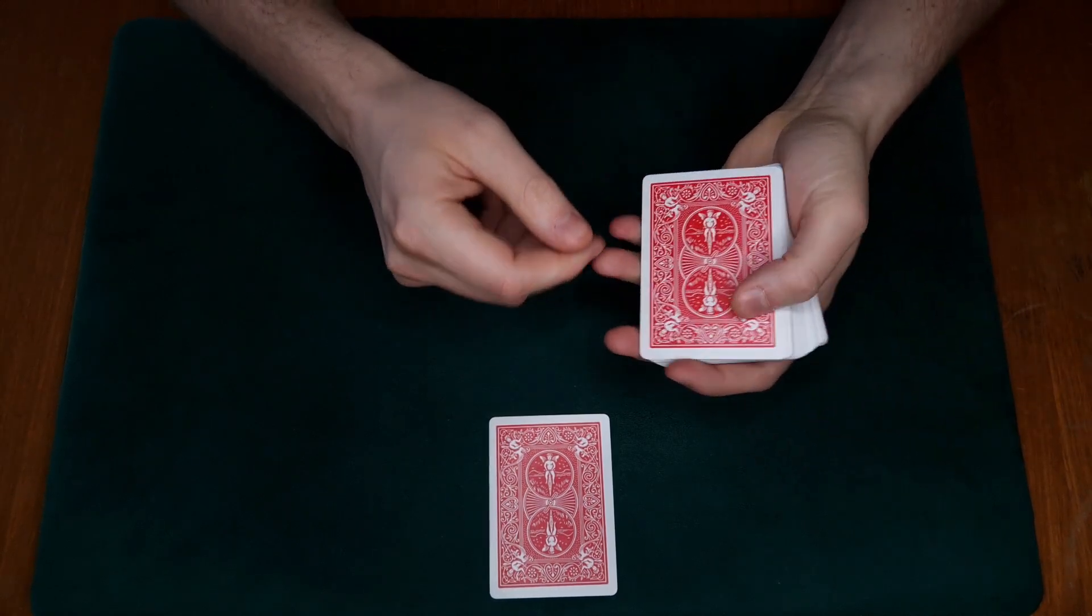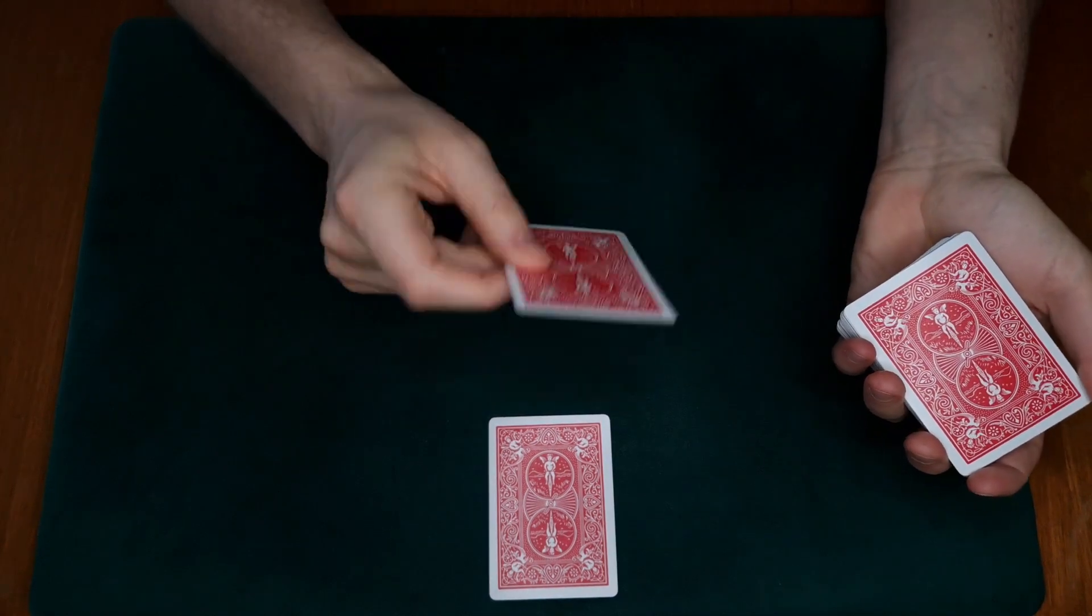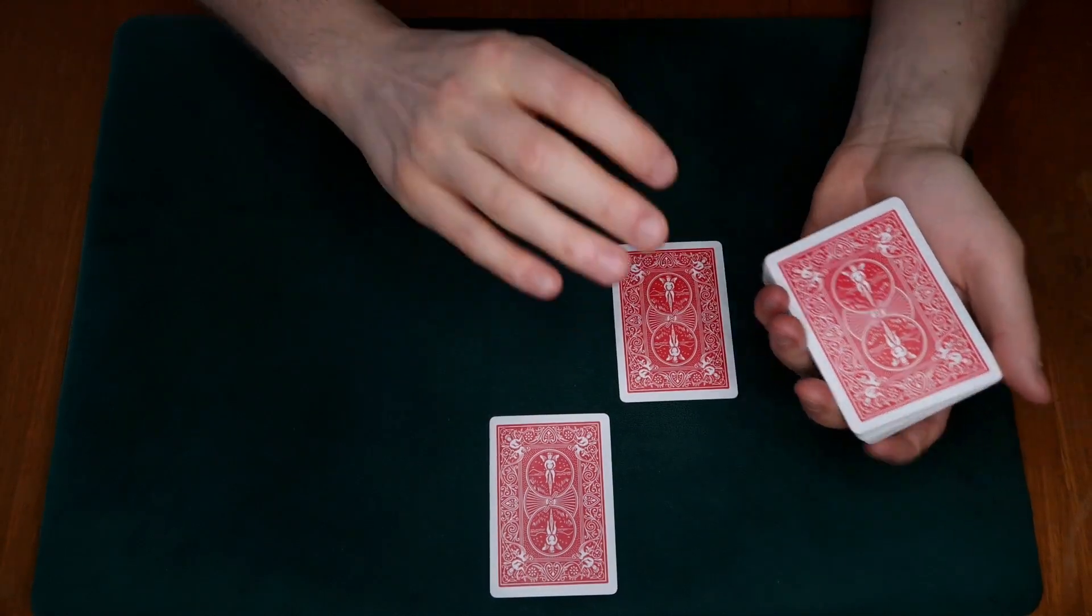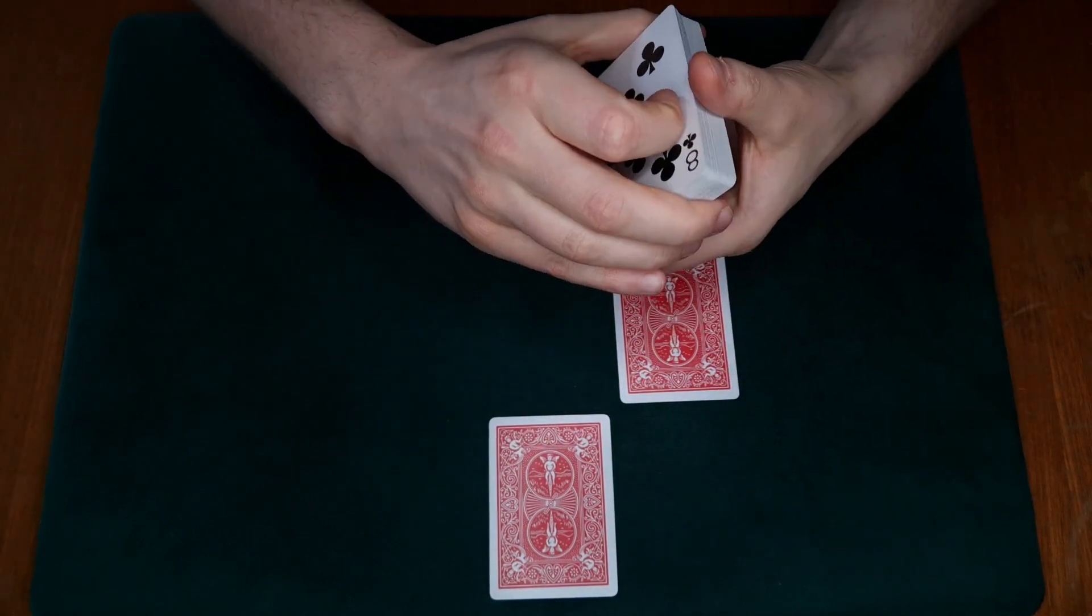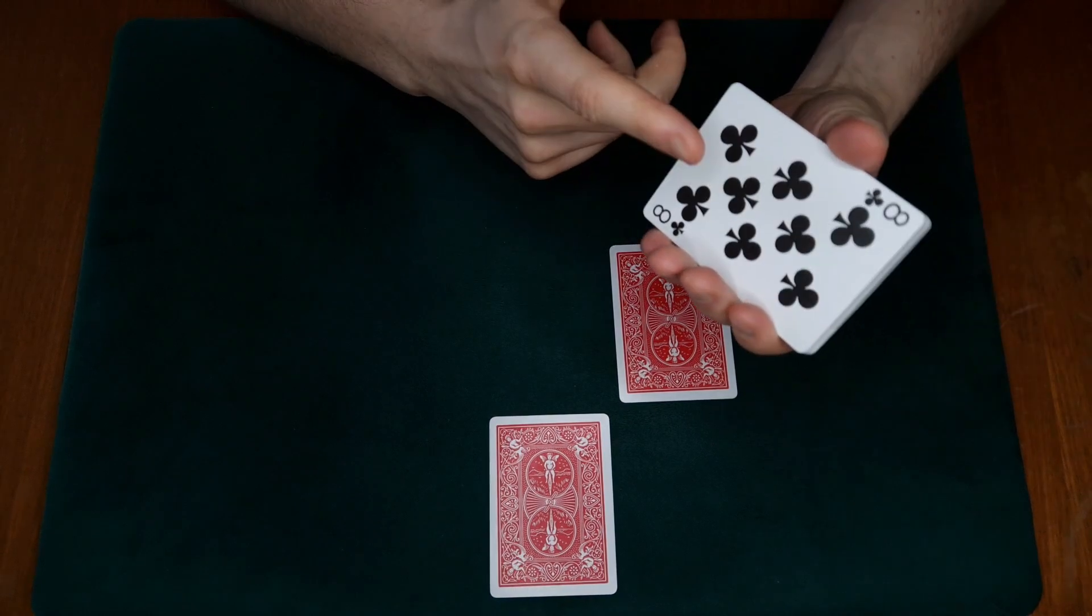Again this is the King of Diamonds, so we say this one tells me the value of your card - your card is a King. Now we turn this one over and we place it - it's a four - right here.